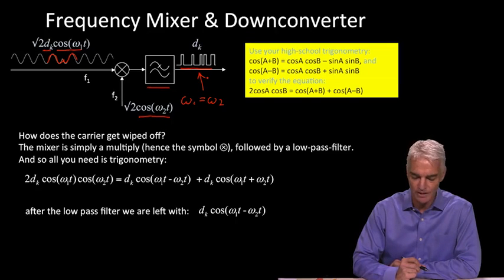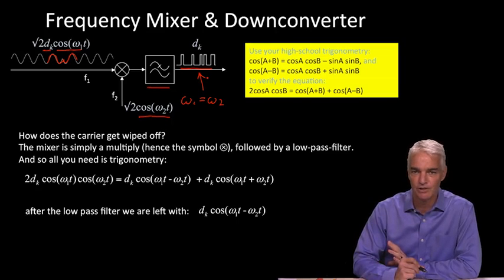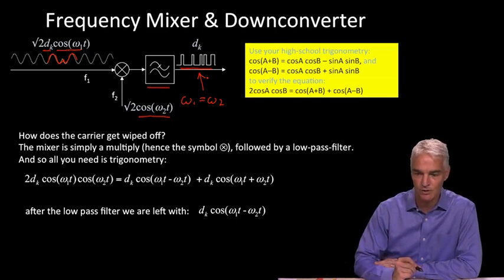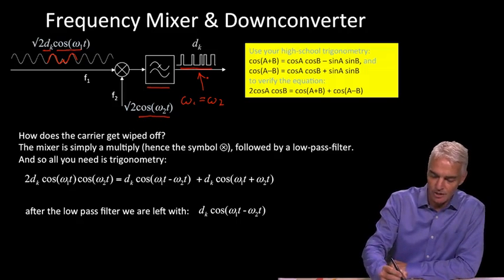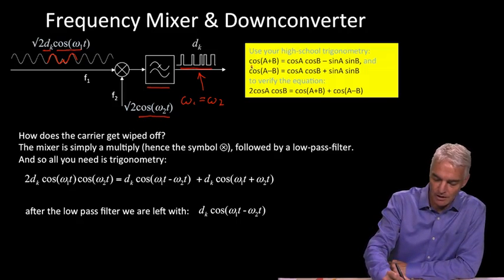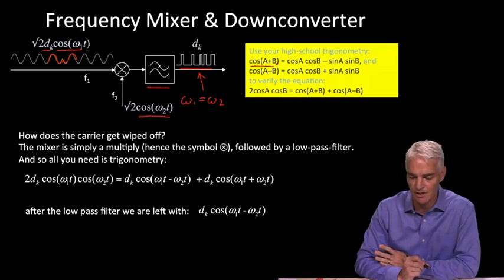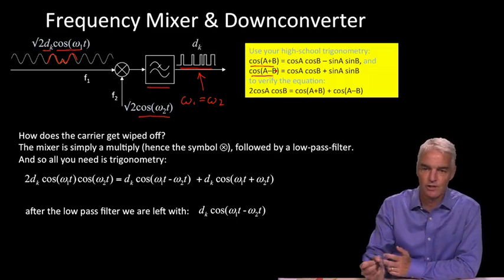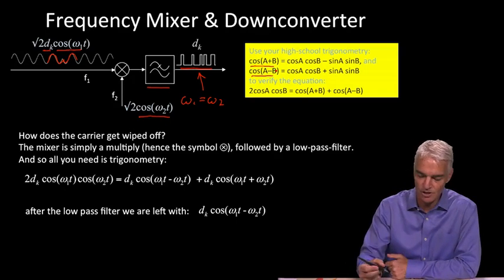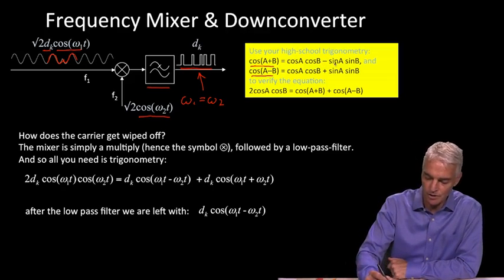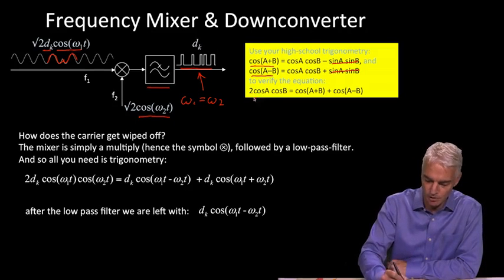Let's go back to some high school trigonometry which you all learned — and maybe when you learned it you never thought you would use it again, but here you are. So thank you, math teacher. We look at cos(a+b): the identity is cos(a+b) = cos(a)cos(b) − sin(a)sin(b), and cos(a−b) = cos(a)cos(b) + sin(a)sin(b). We add both equations — the sine terms disappear — and we get 2·cos(a)·cos(b) = cos(a+b) + cos(a−b).